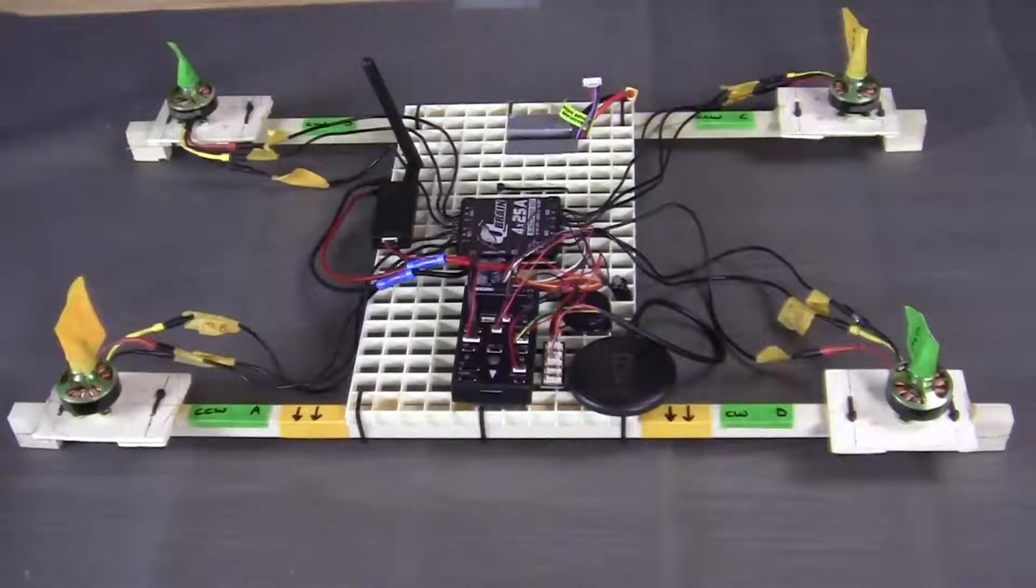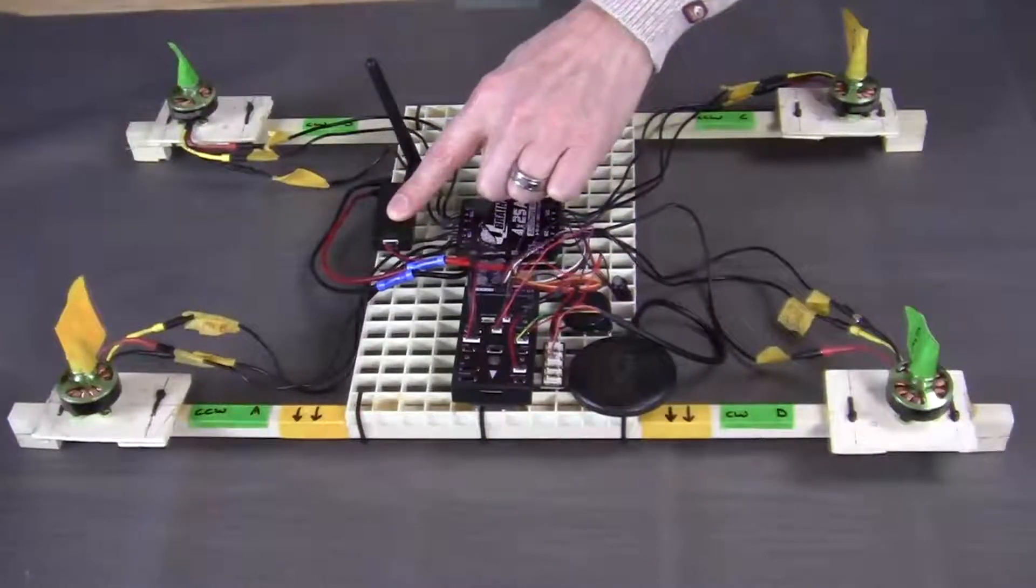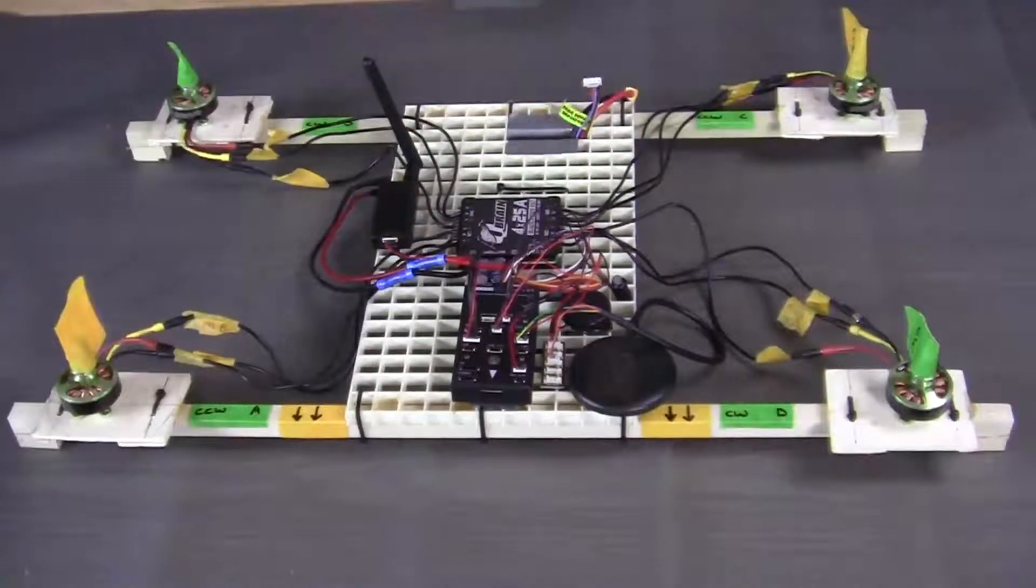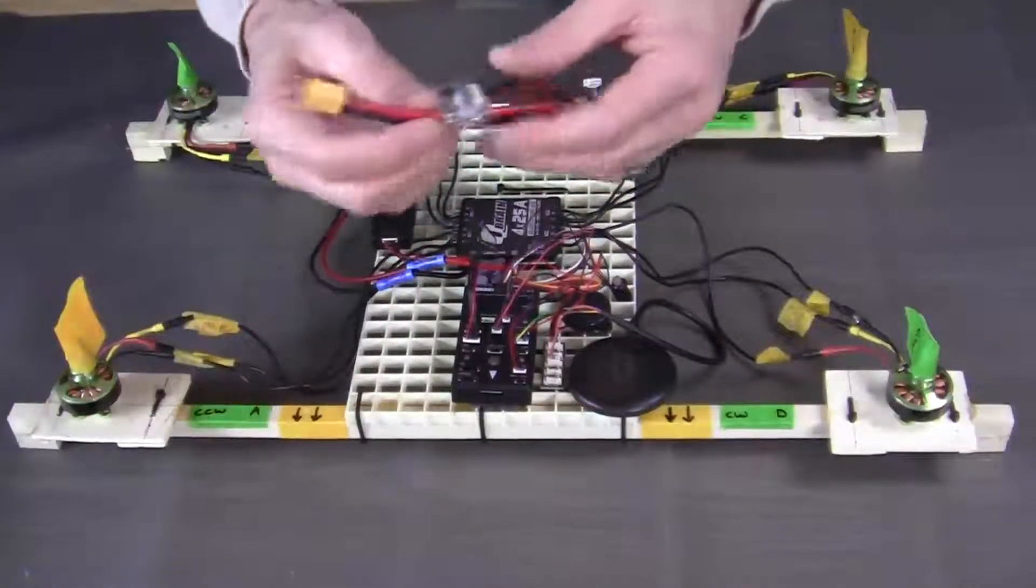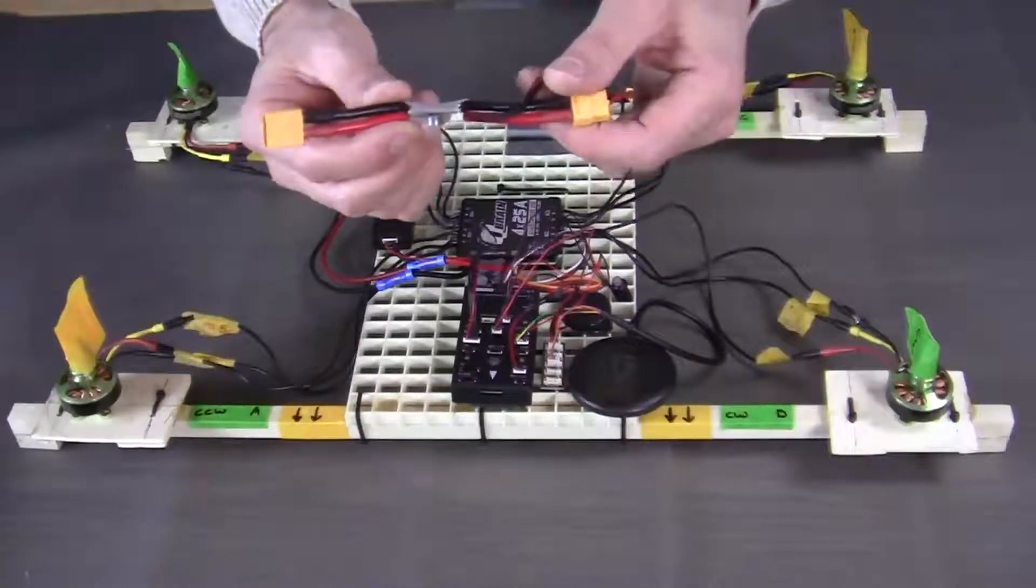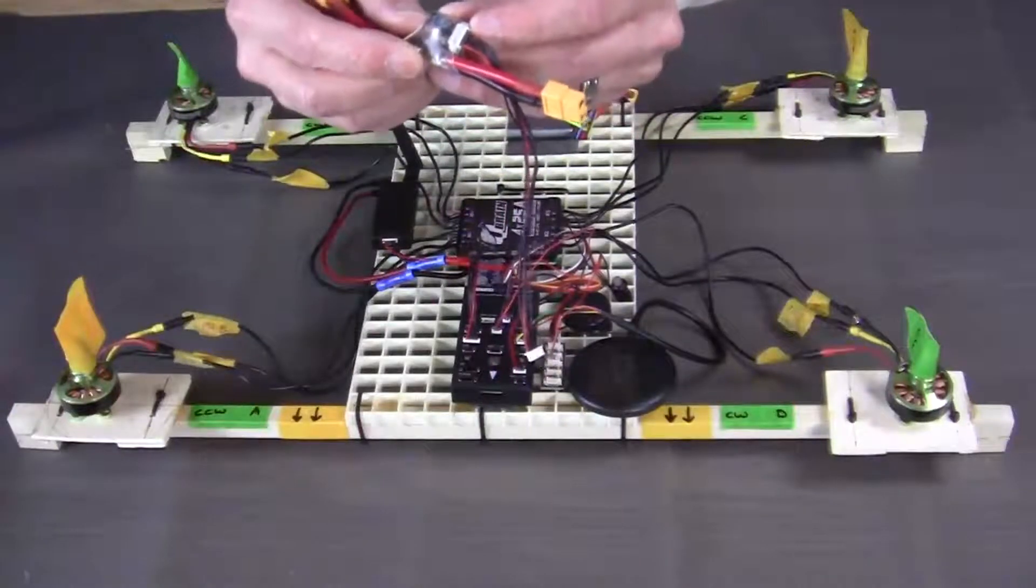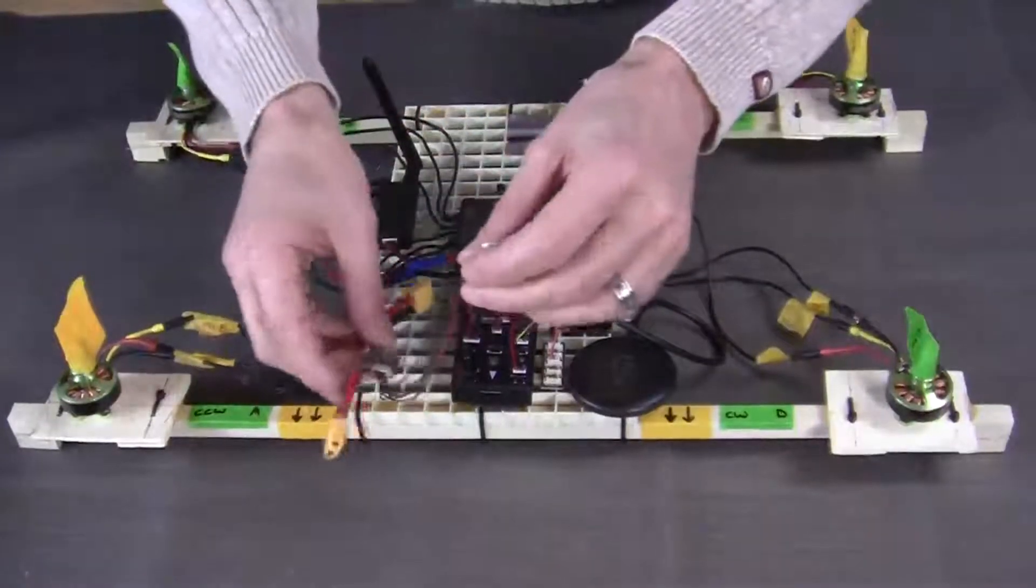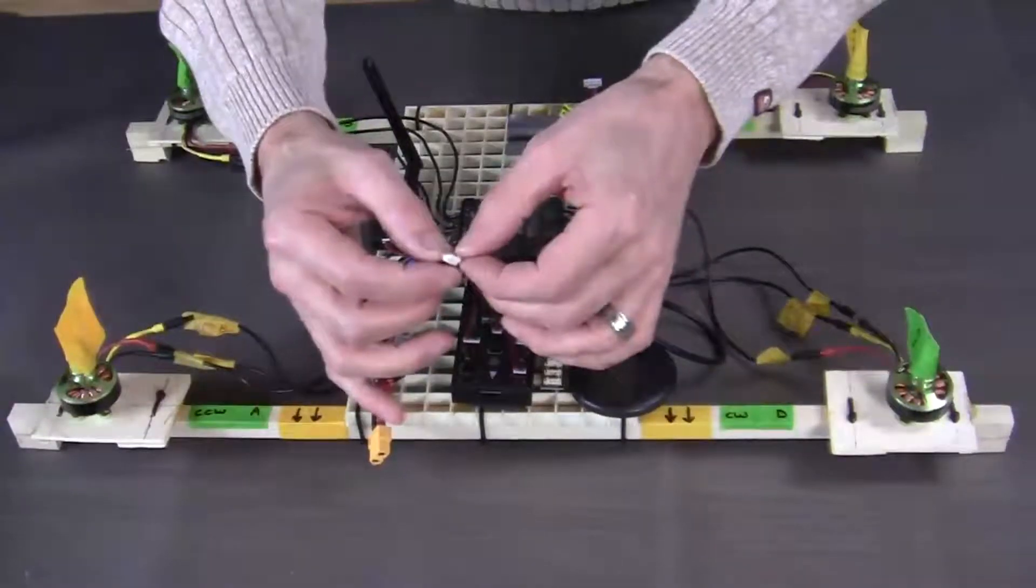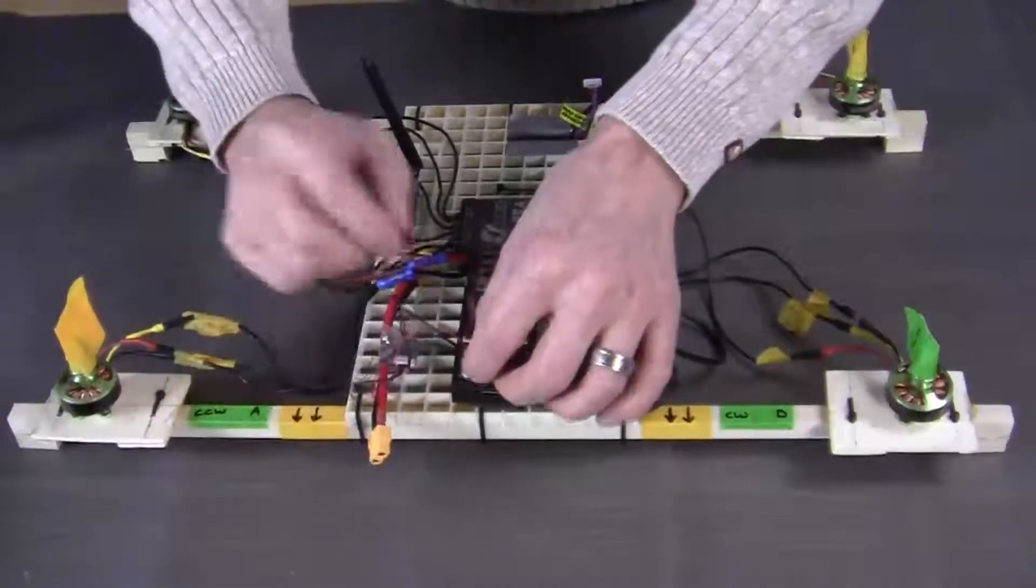All right. So now up to this point we have our telemetry radio. Oh, we didn't hook up the power module yet. So this is the power module that comes with the particular PixHawk flight controller kit that I bought. And we want to connect the connector wire into the power module. And then connect this end of the connector into the power socket on the PixHawk.